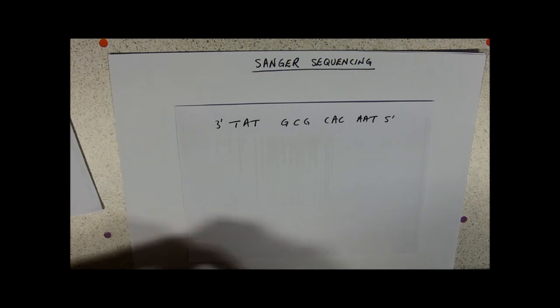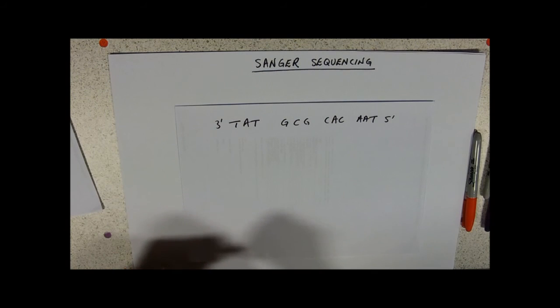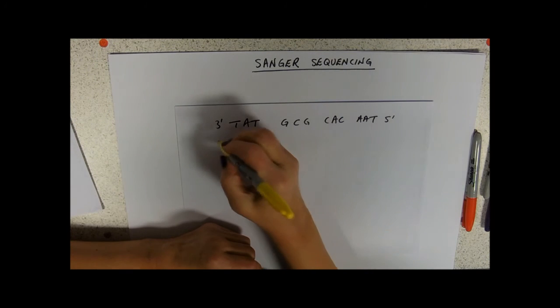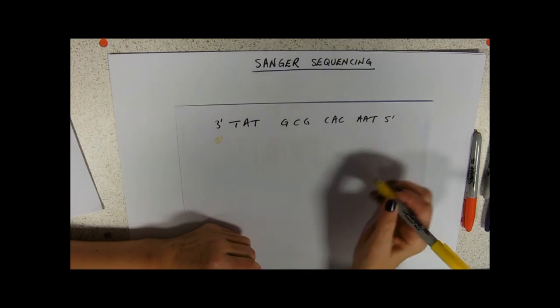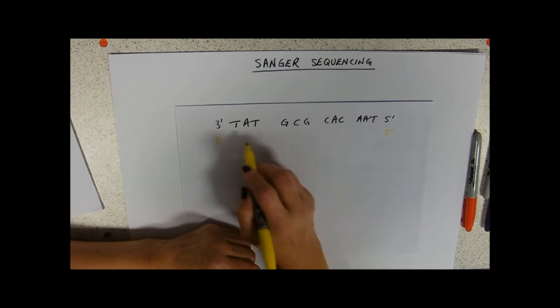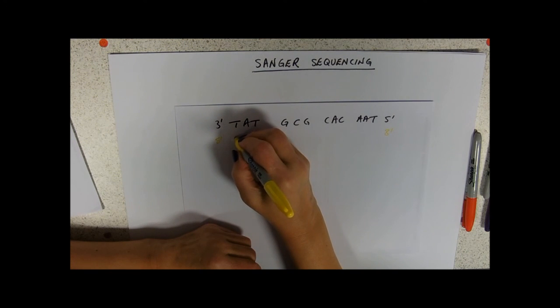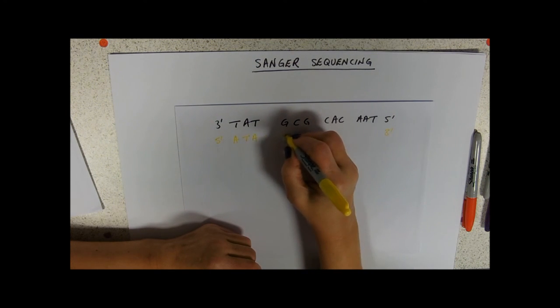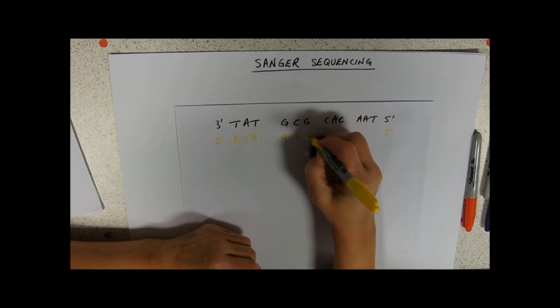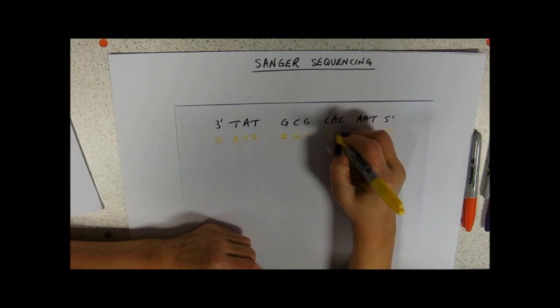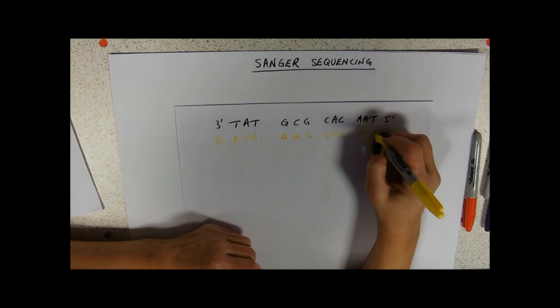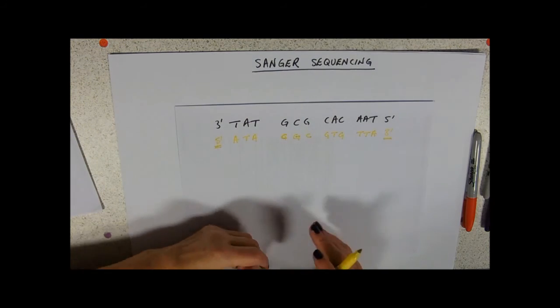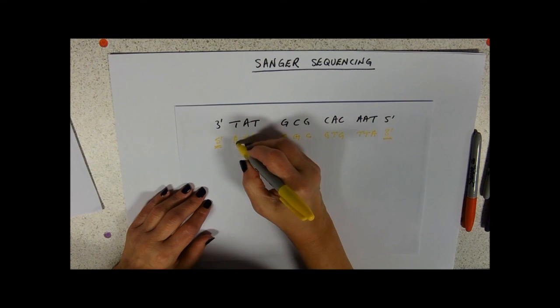If we then replicated that DNA, I'm going to use yellow, I'm not sure how well it'll show up, but I've got a new Sharpie yellow pen so I'm going to use it. In DNA replication what would happen to that strand of DNA is it would replicate into A, T, A, C, G, C, G, C, G, T, G, T, T, A, going again from the five prime to the three prime direction, remembering that's the way in which DNA replication. So the bases are added one at a time.